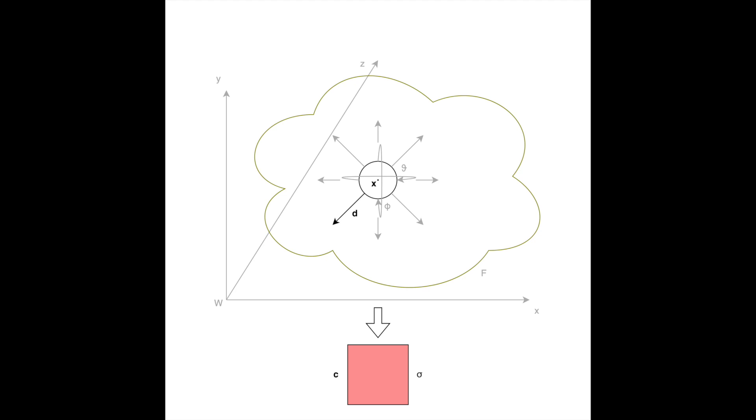As NeRF models objects in this way, view-dependent effects are maintained. For example, if we kept x the same but changed d, then a different colour and volume density can be observed.